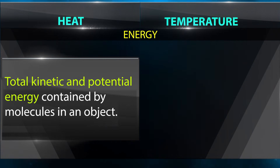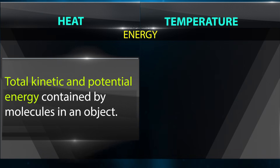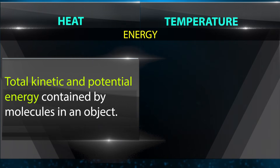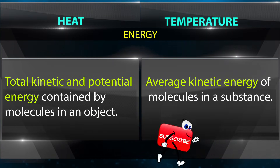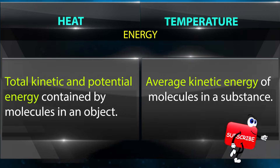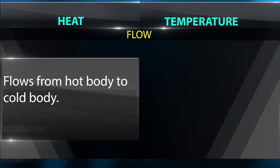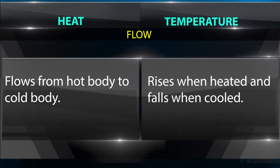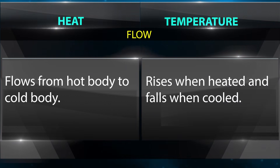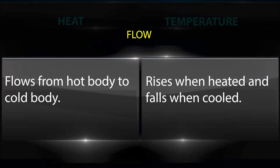Energy of heat refers to the total kinetic and potential energy contained by molecules in an object. Energy of temperature refers to the average kinetic energy of molecules in a substance. Heat flows from a hot body to a cold body, while temperature rises when heated and falls when cooled.